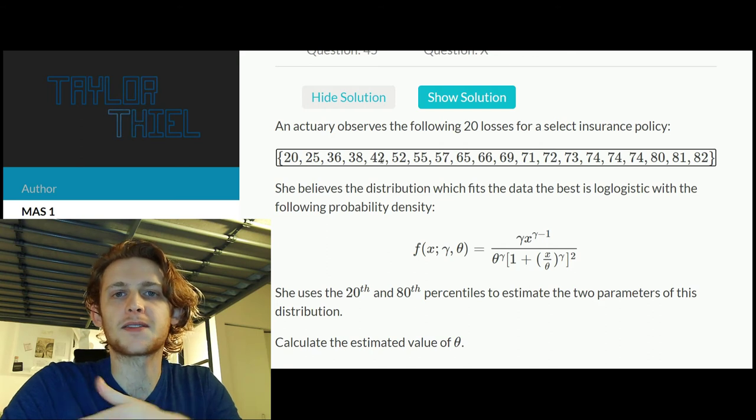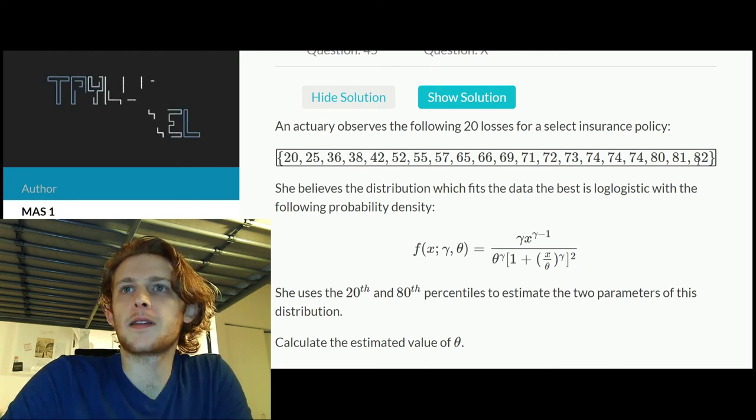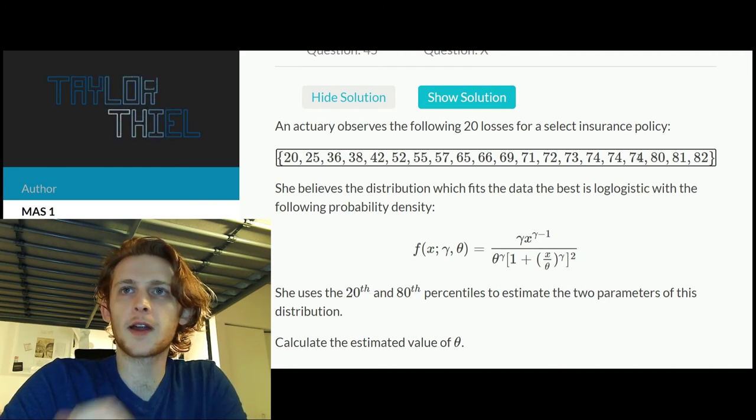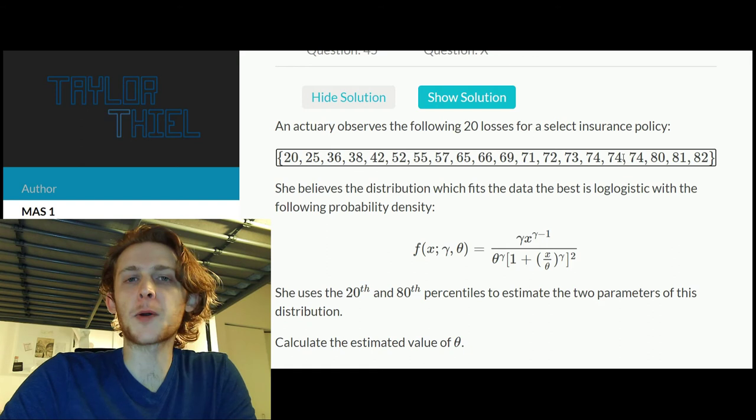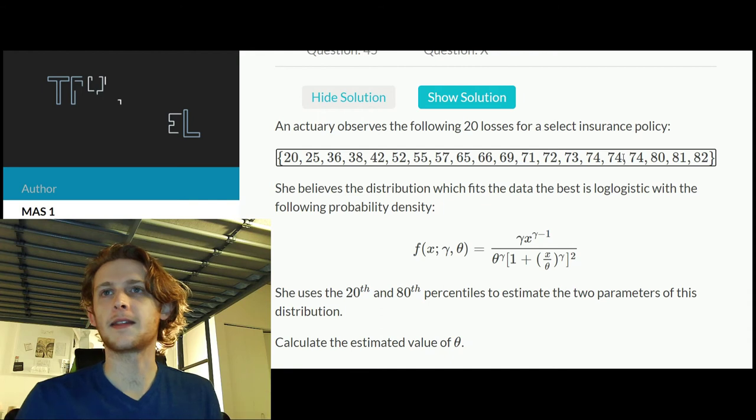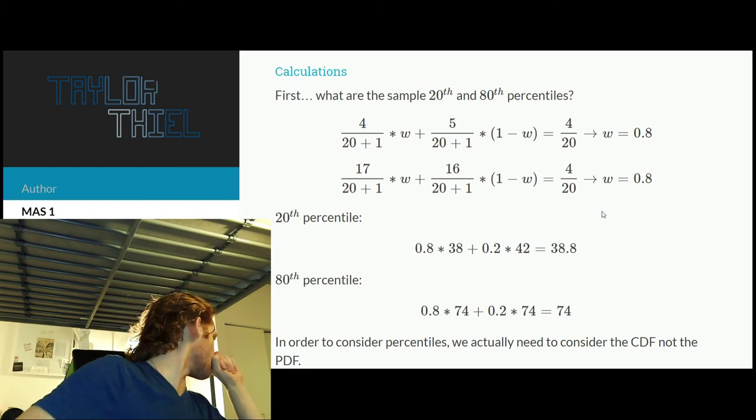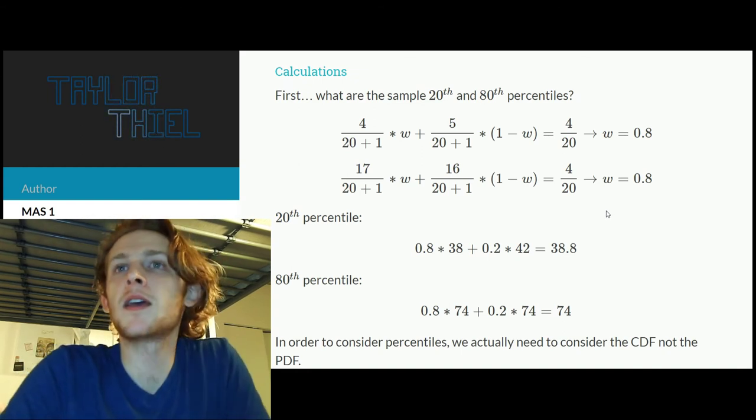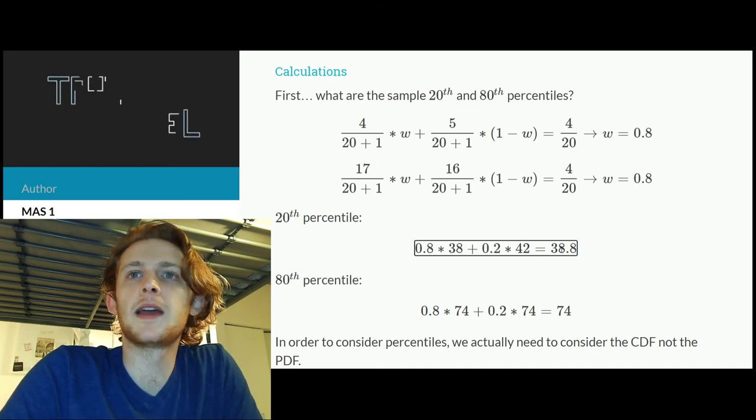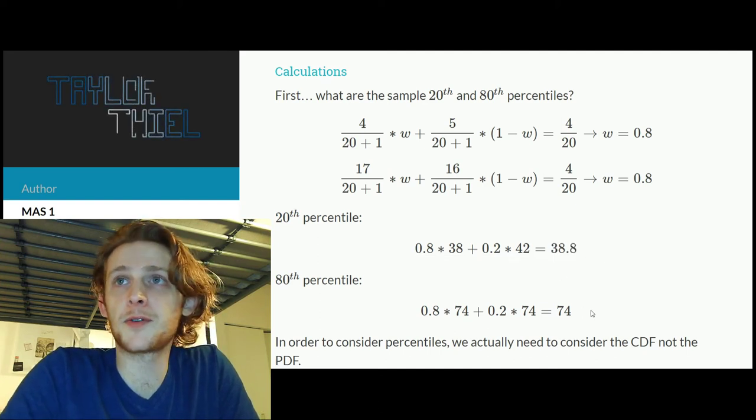So scrolling back up to the problem, we go one, two, three, four, so we're going to give 80 percent weight to 38 and then 20 percent weight to 42 to get our sample observation for the 20th percentile. For the 80th we get lucky, so here same thing in reverse, one, two, three, four, and then five, they're both 74. So again it's gonna be 80 and 20 percent weight, but since they're both 74 the result's just going to be 74. So here we have that 80 percent weight for the 38, 20 percent for the 42, and we get observed 20th percentile of 38.8.